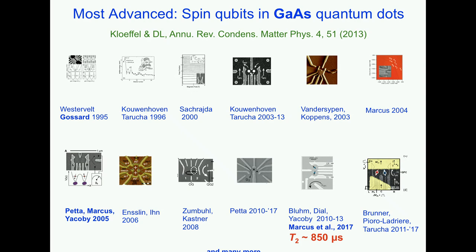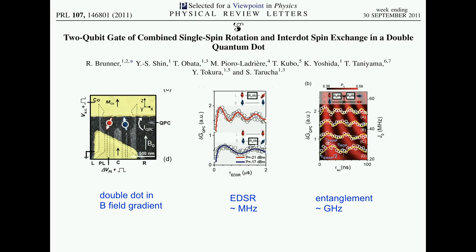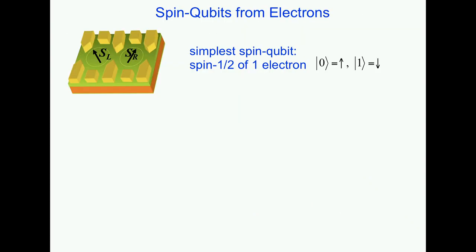There's an entire collection of quantum dot experiments in gallium arsenide around the world where record times have been reached. Probably the best structure at the moment in gallium arsenide is by Tarucha in Tokyo, where they demonstrated full two-qubit operation, single-qubit switching times on the scale of megahertz, and entanglement on the scale of gigahertz. More recently, basically all groups are working now also on silicon, which has the great advantage that you can get rid of nuclear spins.